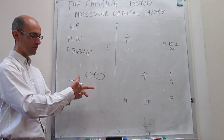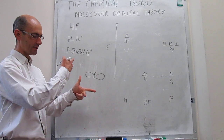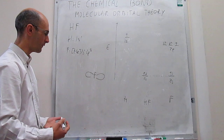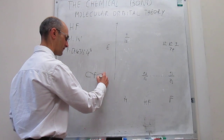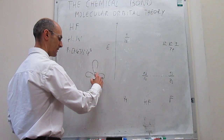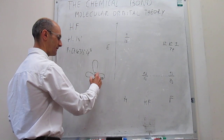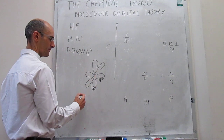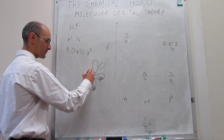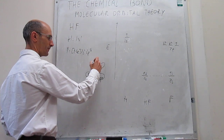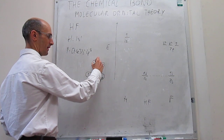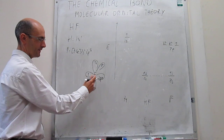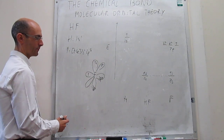If we call this the z-direction, we have the 2pz; the x-direction gives the 2px; and the y-direction comes in and out of the plane, so we have the 2py drawn at an angle. Each of the 2p orbitals in fluorine is considered here, and I'm going to assume that the 2pz orbital is the one that is singly occupied.